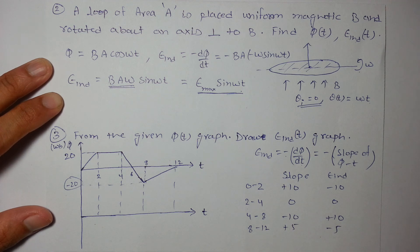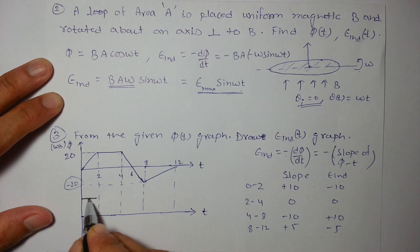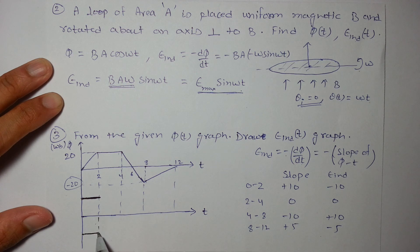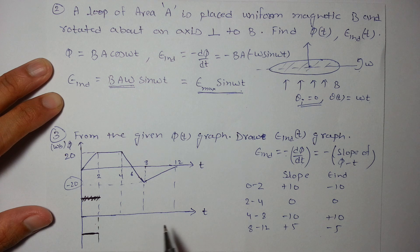So carefully plotting the graph: +10 will be here. From 0 to 2 EMF induced is constant, from 0 to 2 EMF induced is constant and that is, oh sorry I made a mistake, it is -10. The slope is +10, so it is -10.